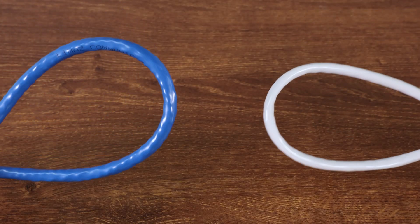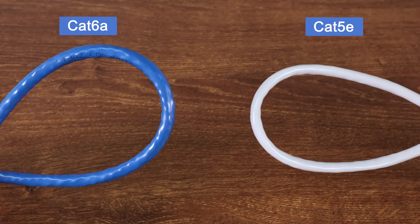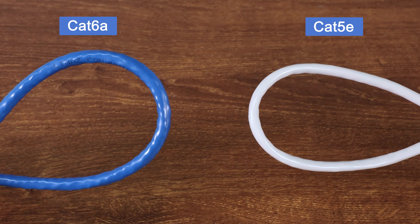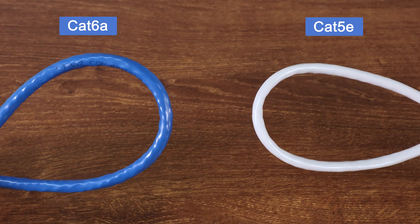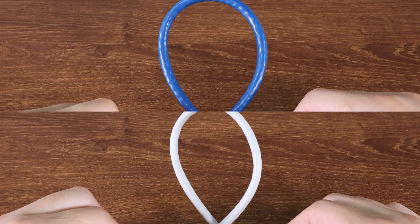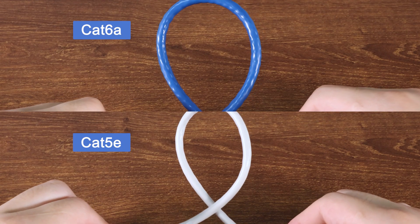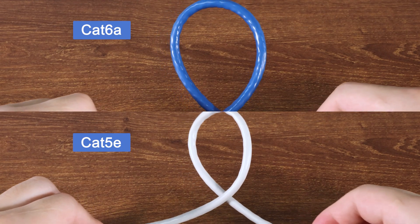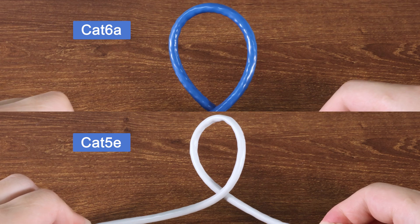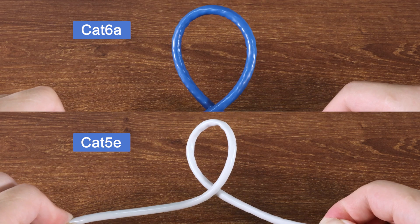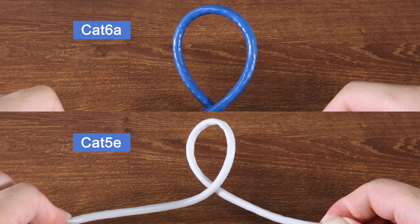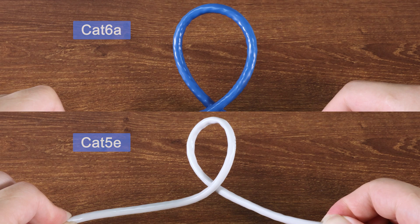Because of this feature, CAT6a cables are usually more robust and harder to bend than CAT5e cables, which are softer and more flexible, making them easier to deploy in any corner.